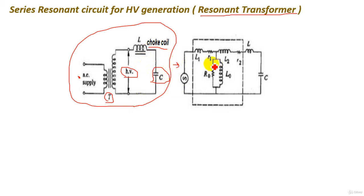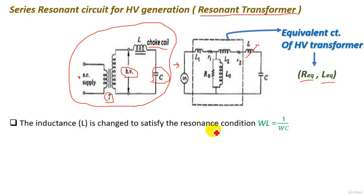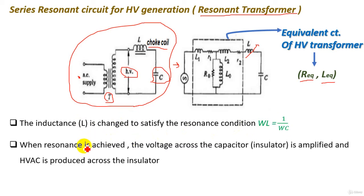The circuit has a supply, and the rectangle represents the equivalent circuit of the high-voltage transformer, which can be represented as an equivalent resistance and equivalent inductor. The variable shock coil is adjusted to make resonance. The inductance L is changed to satisfy the resonance condition ωL equals 1/ωC. When resonance is achieved, the voltage across the capacitor — the insulator — is amplified, and high-voltage AC is produced across the insulator.